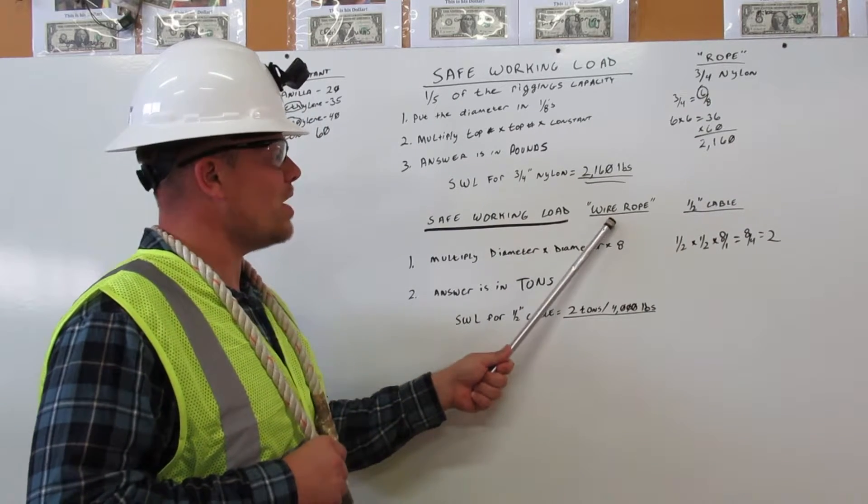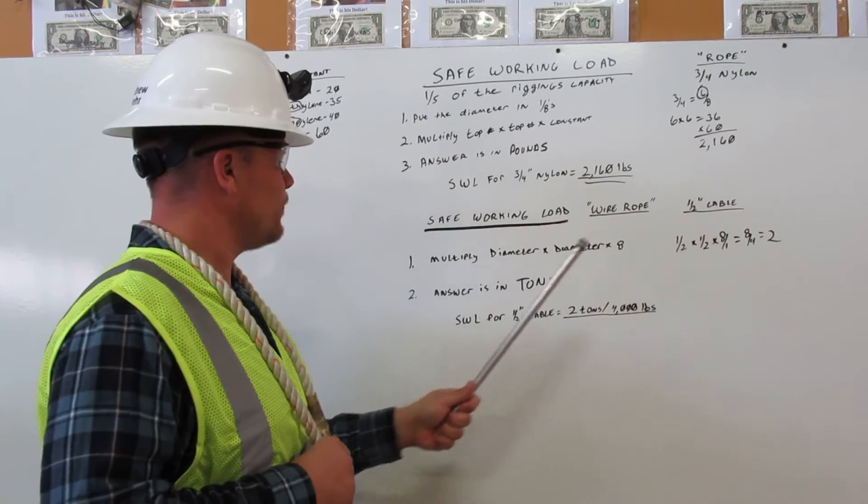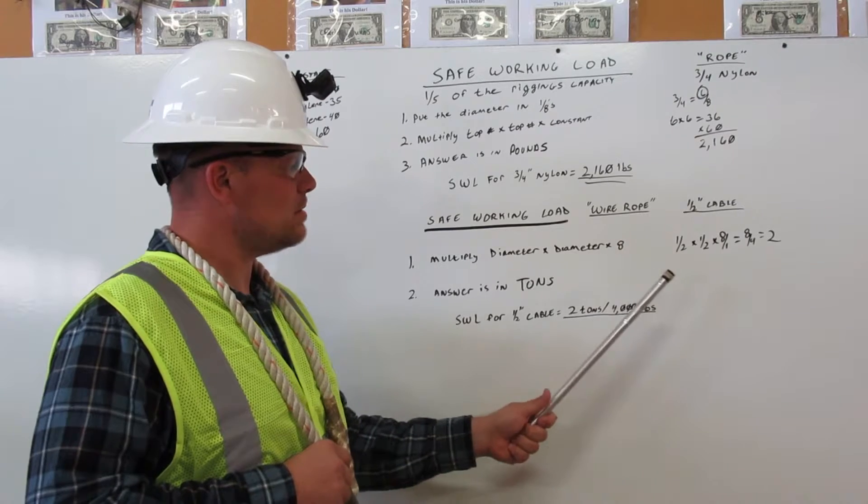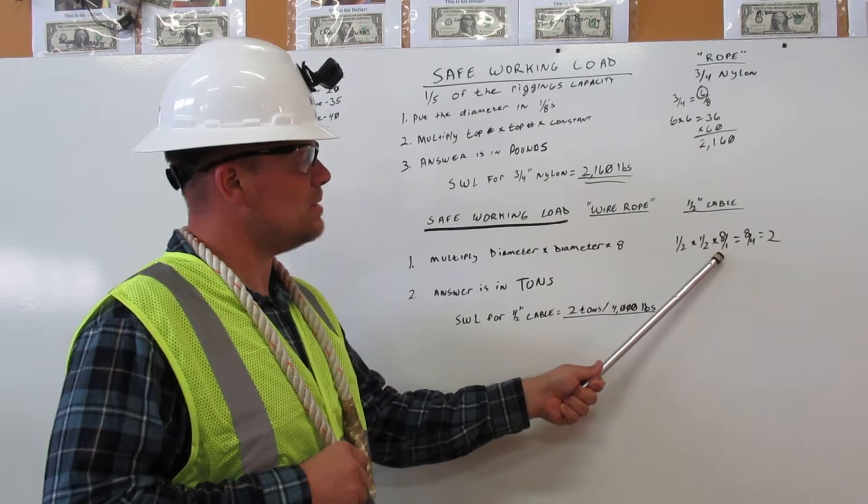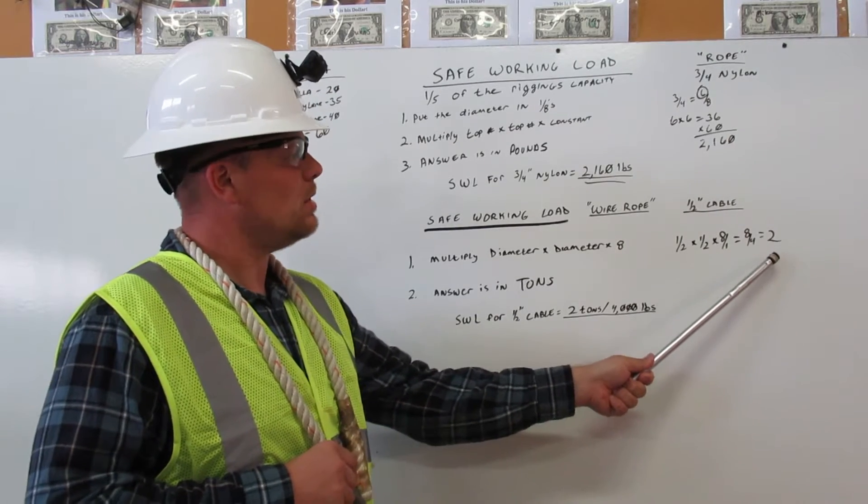Safe working load for wire rope. For this example, we use half-inch cable. You multiply the diameter times the diameter times eight. For that, you will multiply one-half times one-half times eight over one equals eight over four equals two.